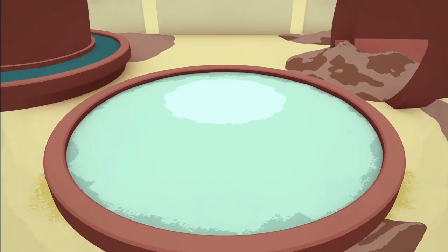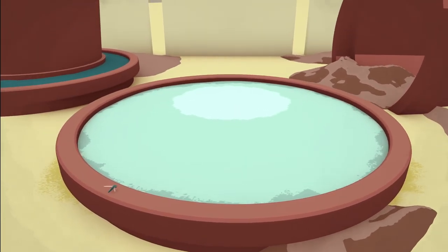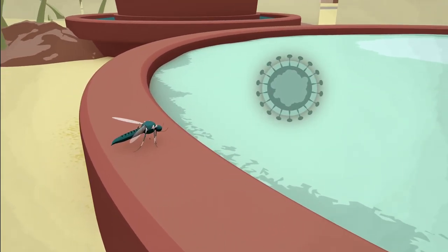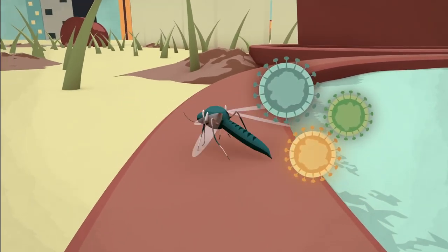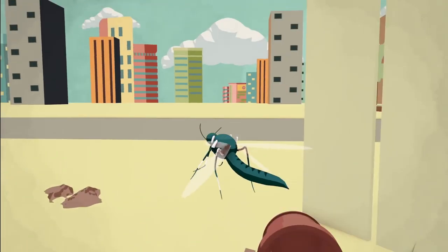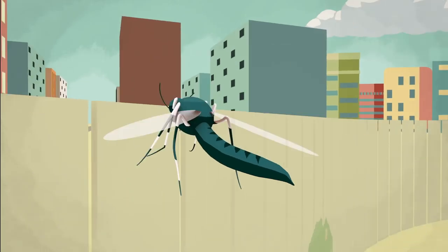Born in shallow pools of water the Aedes aegypti mosquito is a carrier of the Zika virus and others such as yellow fever and dengue. Unlike us it only travels an average of 400 meters from where it's born.